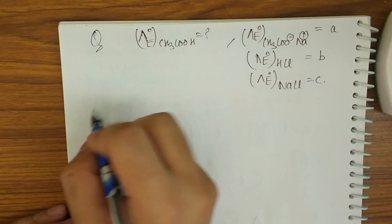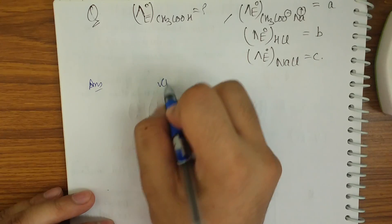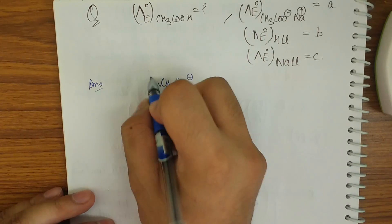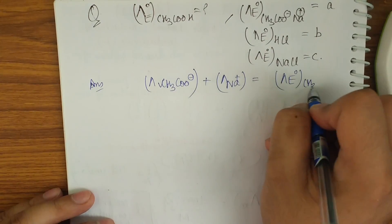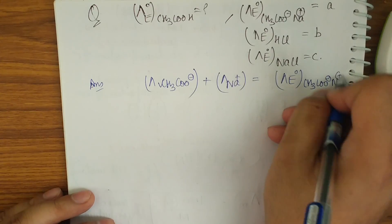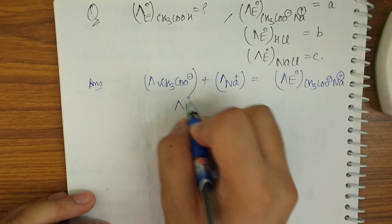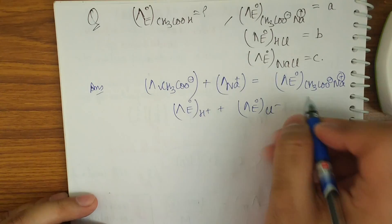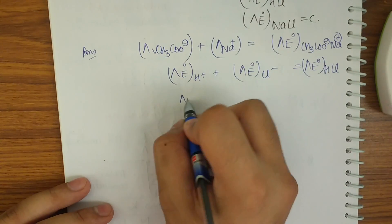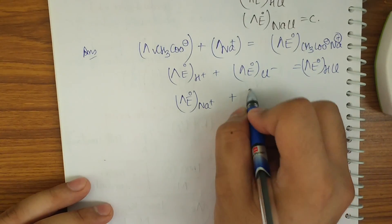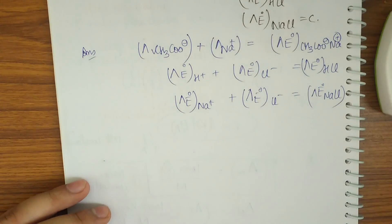We derive this similarly to thermochemistry. We can write λe° of CH3COO⁻ plus λe° of Na⁺ equals λe° of CH3COO⁻Na⁺, since individual conductivities can be added. From the second equation: λe° of H⁺ + λe° of Cl⁻ = λe° of HCl. From the third: λe° of Na⁺ + λe° of Cl⁻ = λe° of NaCl.